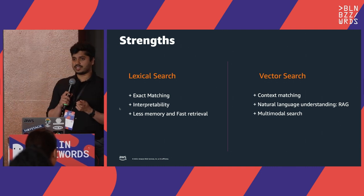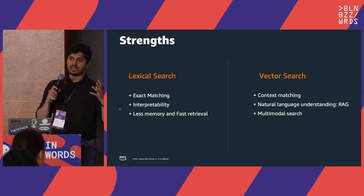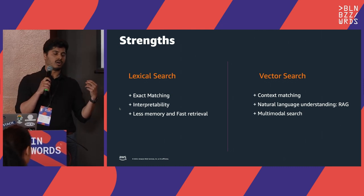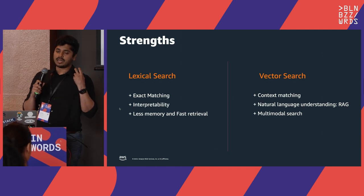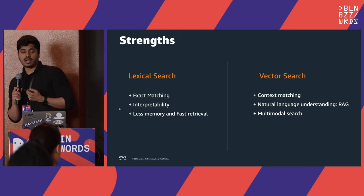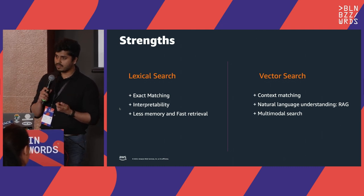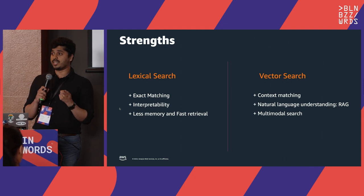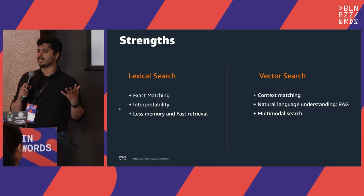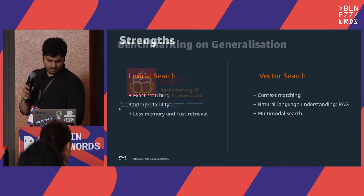Vector search is very capable of doing contextual matching, because the machine learning model that produces your vectors understands the semantic similarity between tokens and document and query vectors — so it gives results based on context, not just keyword match. That's why vector search understands natural language discrepancies and is becoming popular in RAG use cases. Not only that, with vector search you can handle multi-modality: you can encode text, images, audio, and video into vectors and do nearest neighbor search.